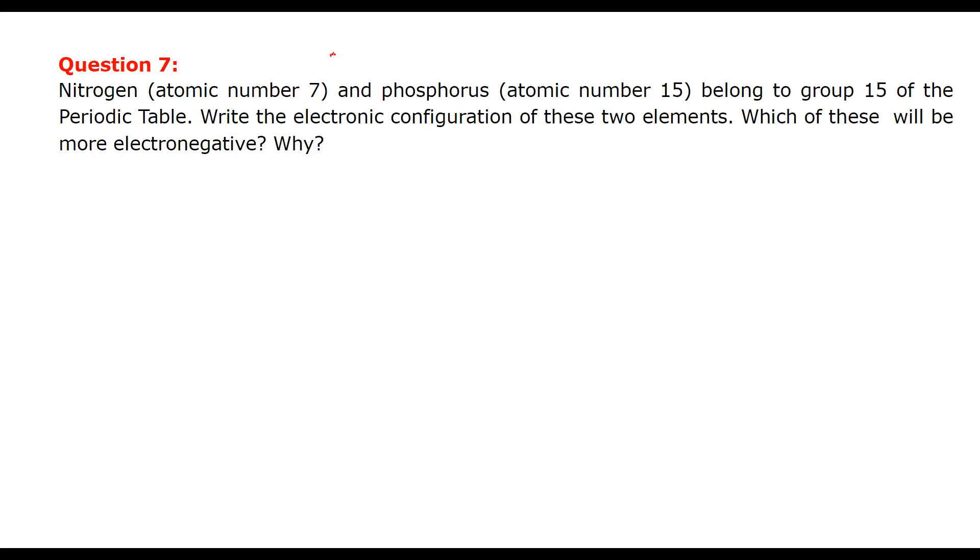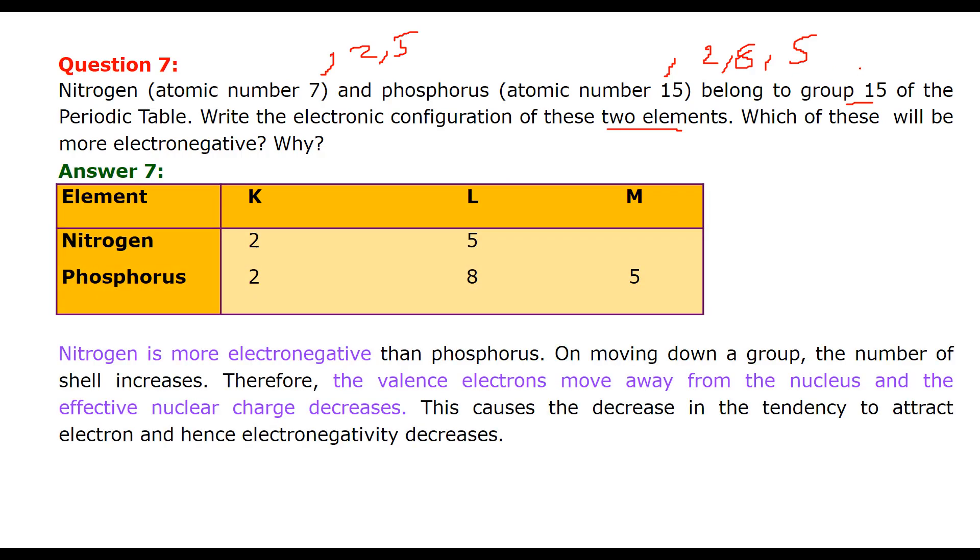Nitrogen with atomic number 7, phosphorus with 15, belong to group 15 of the periodic table. Write the electronic configuration of two elements. So this is 7, so 2, 5. Here we have 2, 8 and 5. Which of these will be more electronegative? Why? Now they belong to group 15. So let us make a table. This is K, L, this is K, L, M. So here we have 2, 5 as I showed here. And in K, L, M, we have for phosphorus, 2, 8, 5.